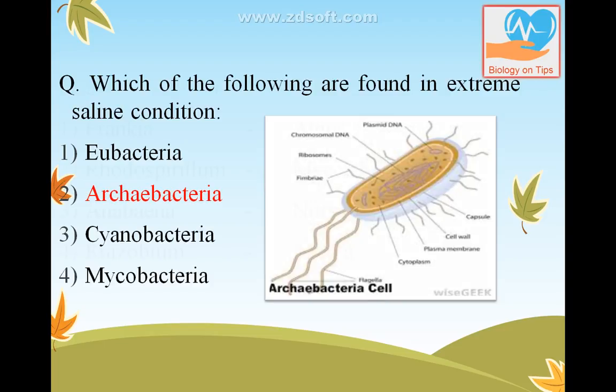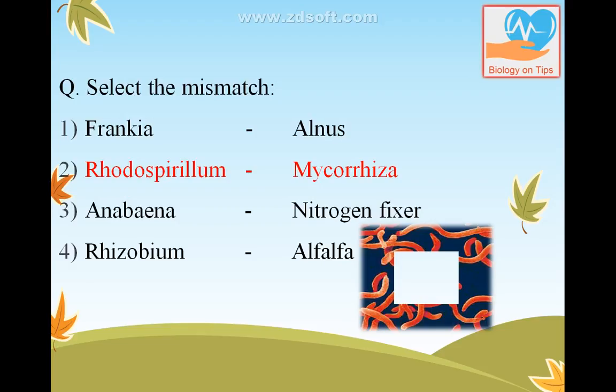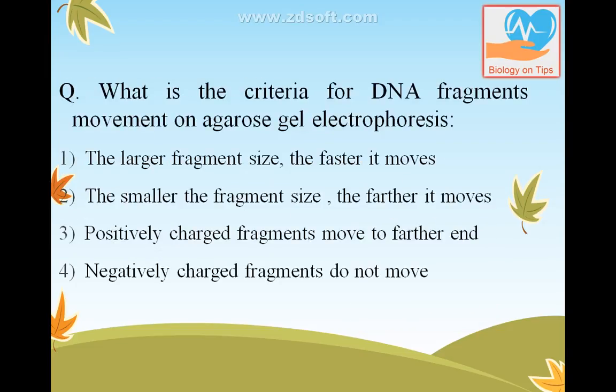Select the mismatch. The answer is Rhodospirillum, because Rhodospirillum is an anaerobic free-living nitrogen-fixing bacteria, whereas mycorrhiza is a symbiotic association between fungus and the roots of higher plants.